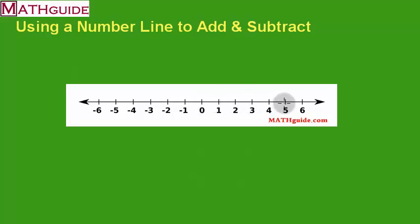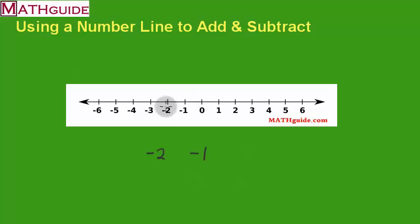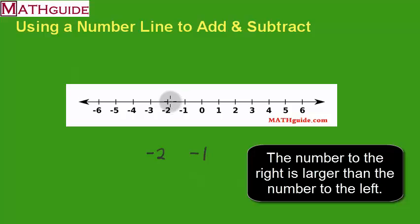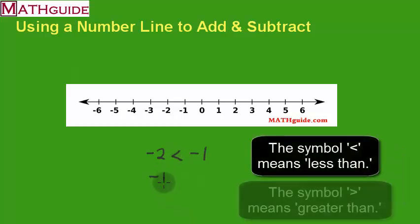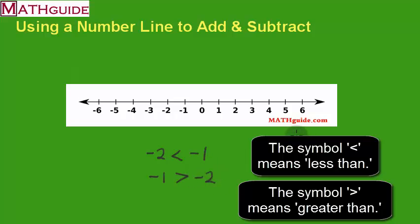When you make a number line, traditionally put zero in the middle, then count to the right one unit at a time: one, two, three, four, five, six, and to the left put negative one, negative two, negative three, negative four, negative five. Notice how negative one is further to the right than negative two, so negative two is smaller than negative one. The number line helps us place things in order, and in the next section we'll see how it can be used to actually add and subtract positive and negative numbers.